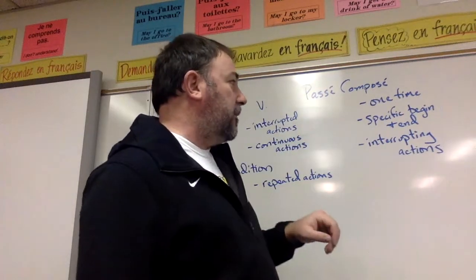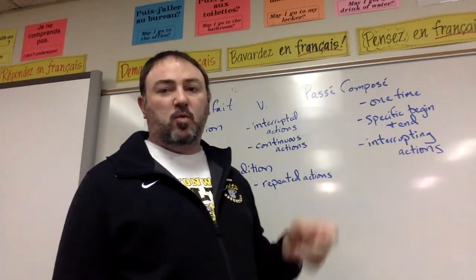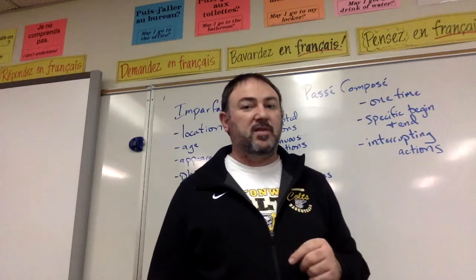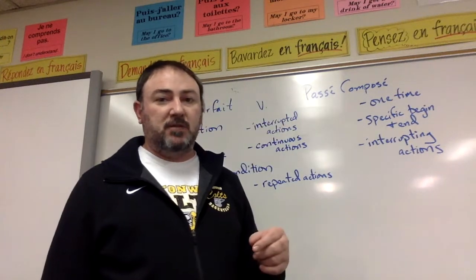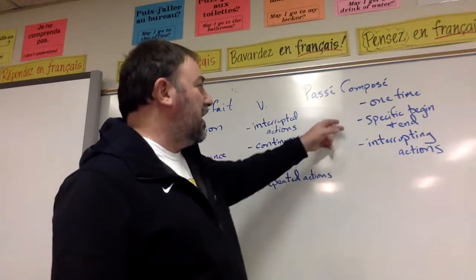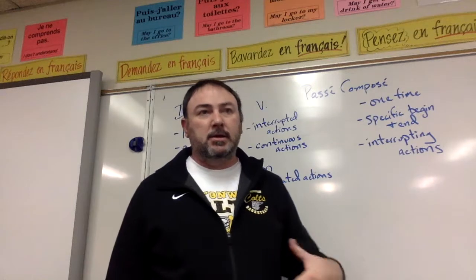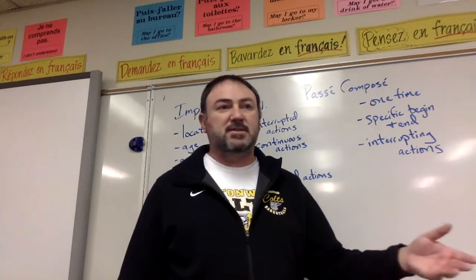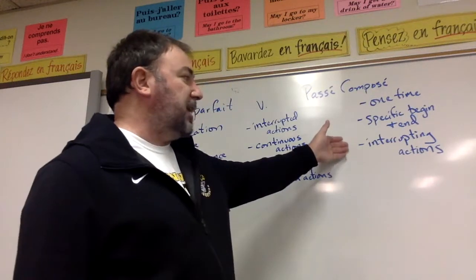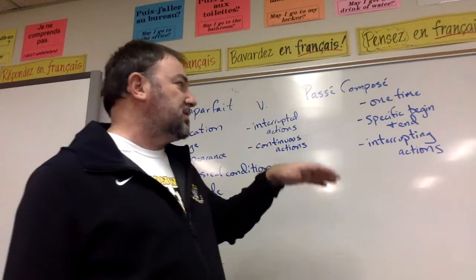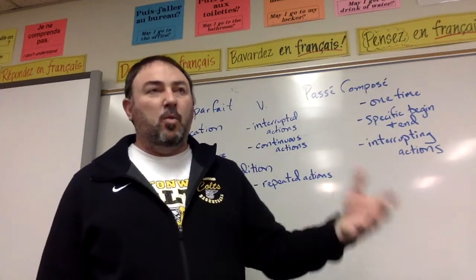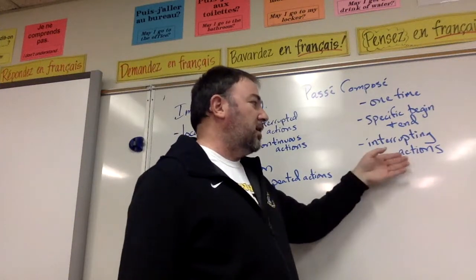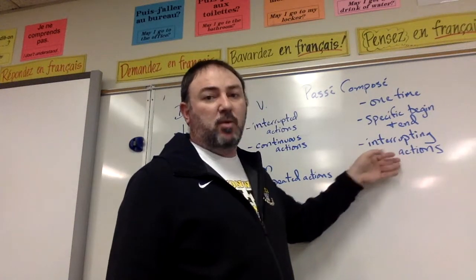Now if we're using passé composé, these are the specific times: something that happened one time — a prime example would be 'I was born,' which only happened once and happened in the past. It has a specific beginning and ending — for example, we were on vacation from March through July of 2016. And interrupting actions — this goes along with interrupted actions. An example would be: 'I was reading the paper when the car exploded.' The 'I was reading the paper' is the interrupted action in l'imparfait, while 'the car exploded' is the interrupting action and would be written in passé composé.